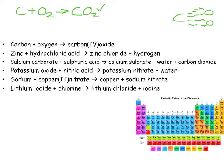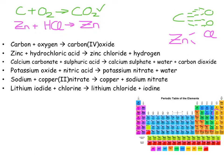Then we're going to look at zinc, Zn, plus hydrochloric acid HCl. Zinc always has a valency of 2 as given on our sheet — even though it's a transition metal, it has a constant valency. Chlorine is in group 7, so 8 minus 7 gives valency 1. That gives ZnCl₂ plus hydrogen, which is diatomic H₂.